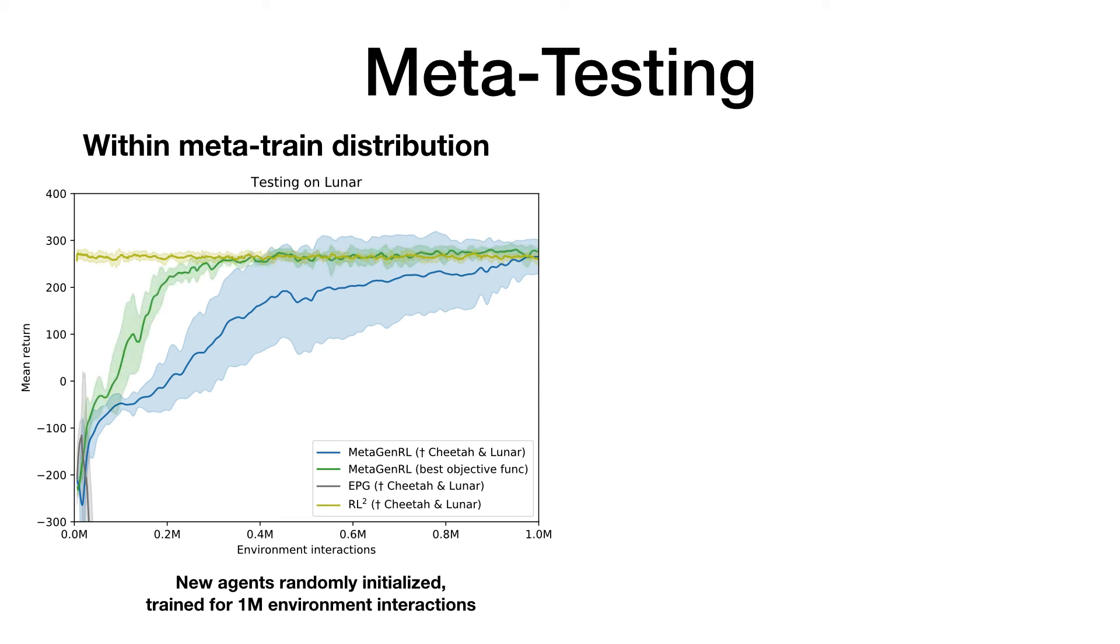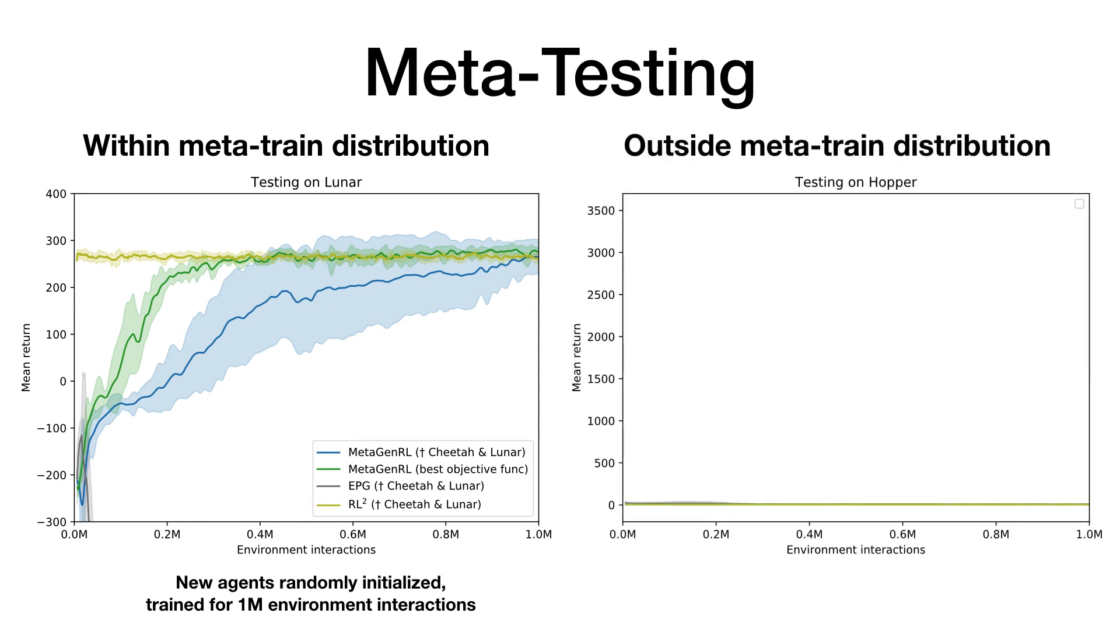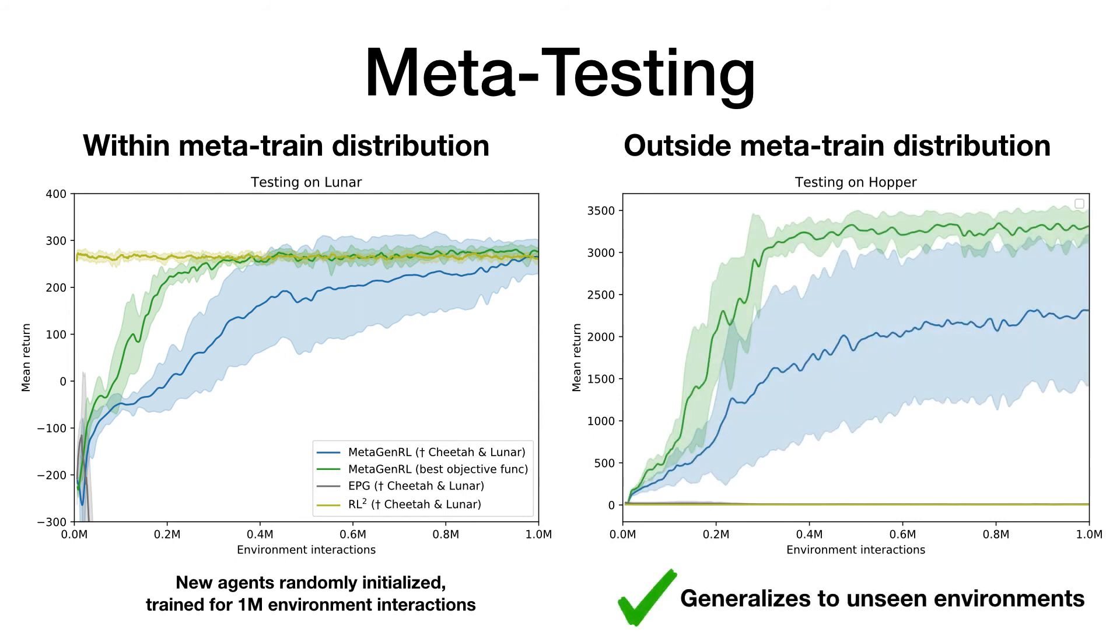When testing the baseline RL² on Hopper, a significantly different environment, it appears to have overfit to the training distribution. In contrast, our meta-learned objective function generalizes and allows learning even in this significantly different environment.